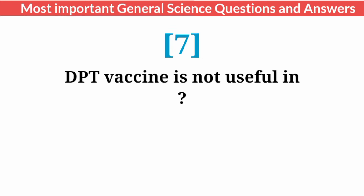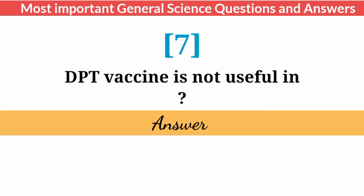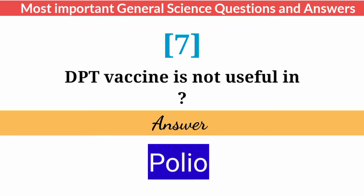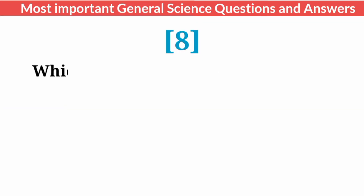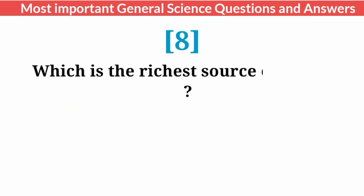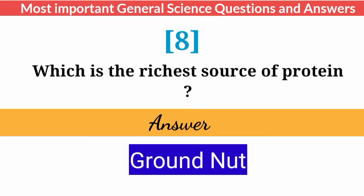DPT vaccine is not useful in? Answer: Polio. Which is the richest source of protein? Answer: Ground Nut.